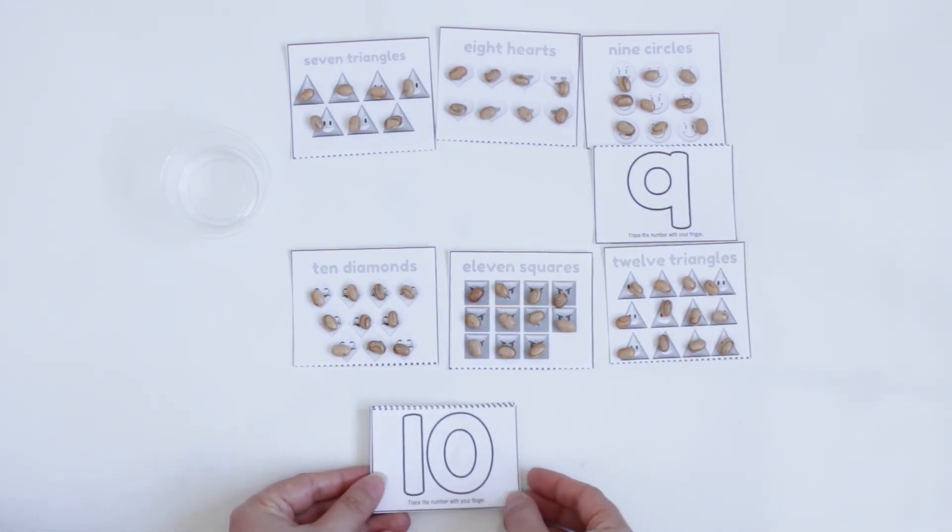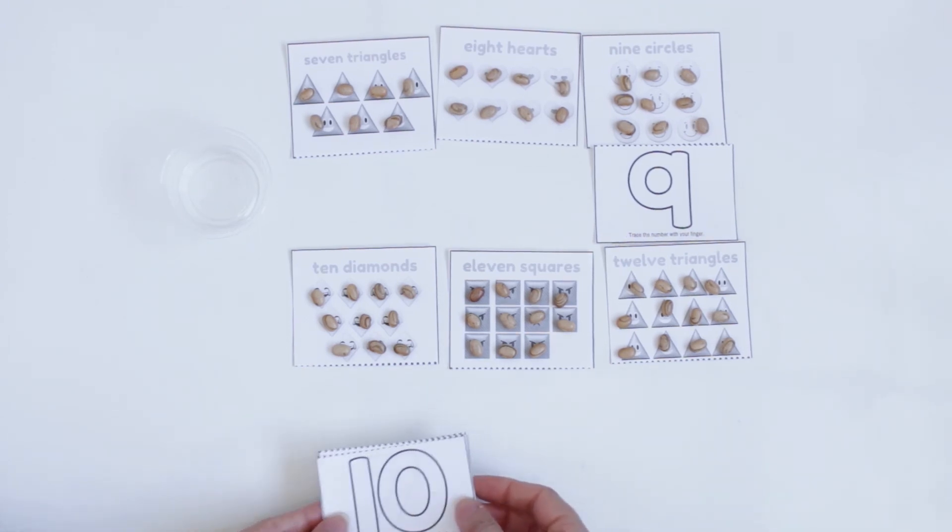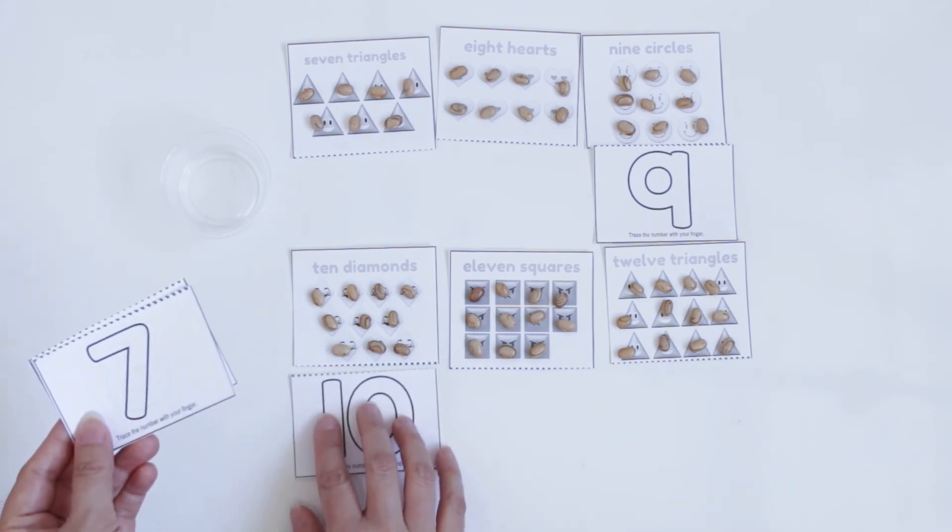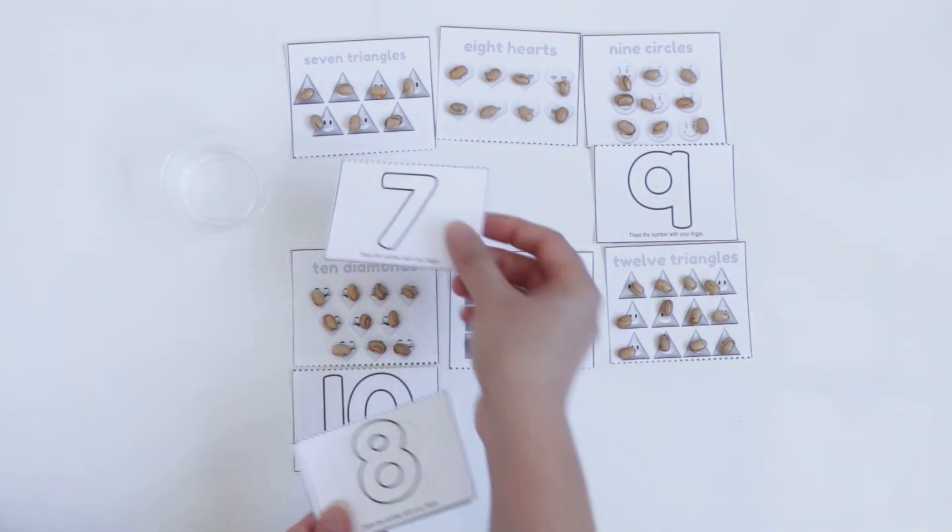Which number is this one? 10. So I'm going to trace first. And where do I have 10? 10 what? 10 diamonds. So here, 10. Here, 7. So I have 7 what? 7 triangles.